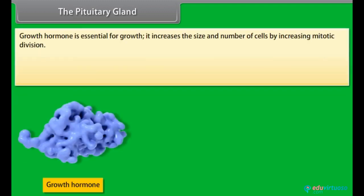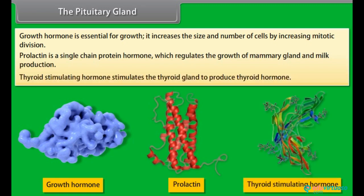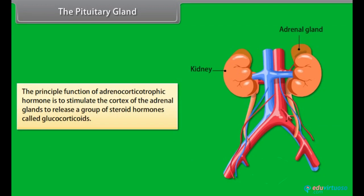Growth hormone is essential for growth; it increases the size and number of cells by increasing mitotic division. Prolactin is a single chain protein hormone which regulates the growth of mammary glands and milk production. Thyroid stimulating hormone stimulates the thyroid gland to produce thyroid hormone. The principal function of ACTH is to stimulate the cortex of the adrenal glands to release glucocorticoids.